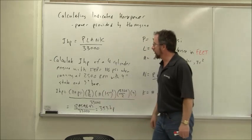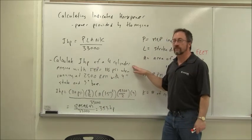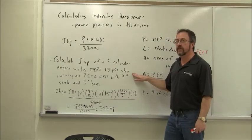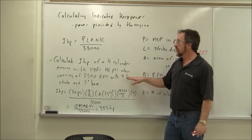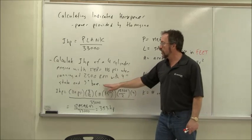So let's look at an example. Calculate the IHP of a 4 cylinder engine with MEP of 110 psi, when it's running at 2500 RPM. It has a 4 inch stroke distance and a 3 inch bore.